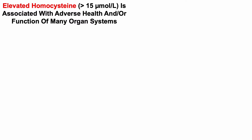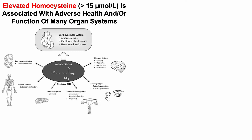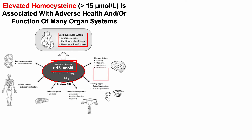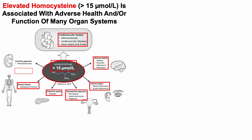Investigating further, elevated homocysteine — defined as having homocysteine greater than 15 micromolar — is associated with adverse health and/or function of many organ systems. Starting with homocysteine in the center, with greater than 15 micromolar being defined as elevated, we can see that it's associated with adverse health and/or function of the cardiovascular system, the brain, eyes and ears, the female reproductive apparatus, the pancreas, bone, and kidney.